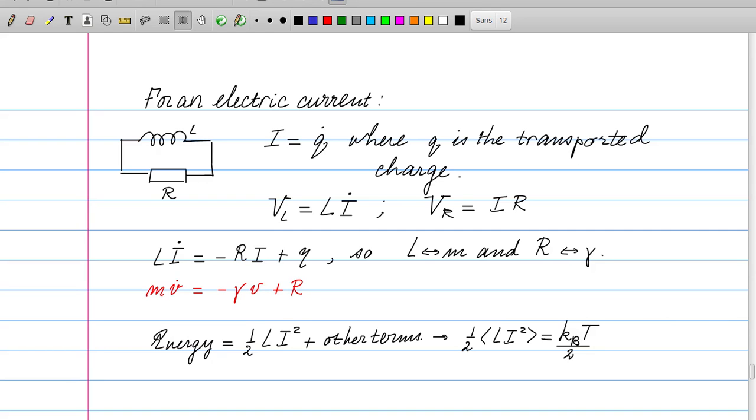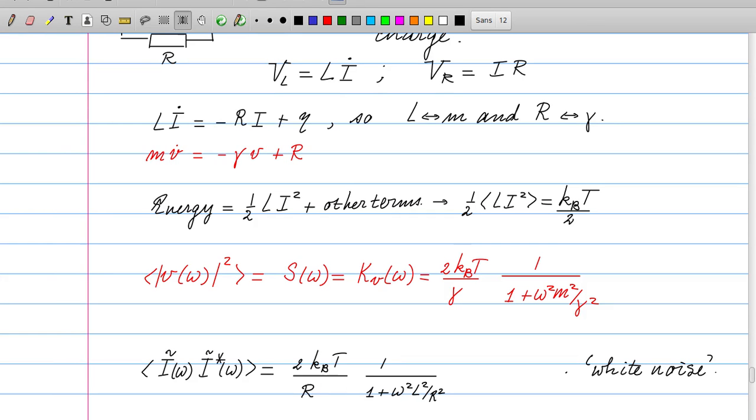We can therefore immediately translate the results that we obtained for a particle in the Langevin equation to this case. First of all, we would like to identify the kinetic energy, which is half mv squared. So that becomes now half times Li squared, which is indeed the energy in the inductance. Exploiting the analogy with the Langevin particle, for which we obtained that the expectation value of v at frequency omega is given by this expression, we can now immediately use that for the current. So the power spectrum is given by this expression. And so for small omega, we see that this is a power which is independent of the frequency. So for small omega, we have white noise. This can be immediately translated into a voltage noise, because in the resistance, the voltage is simply proportional to the current. And we find that this is equal to 2 kT R, provided that omega is indeed smaller than R over L.